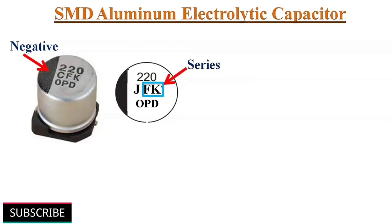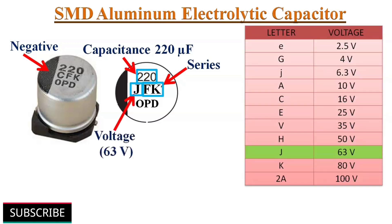Another type is the AFK series, where capacitance value is indicated with three digits — here it is 220µF. The letter J indicates a voltage rating of 63V, so the capacitance value is 220µF 63V.